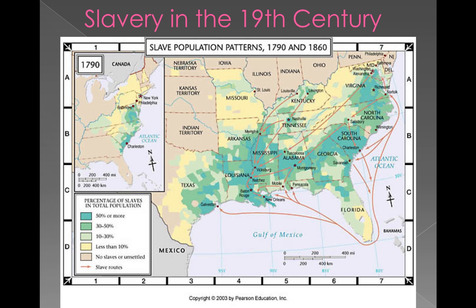When the international slave trade is abolished in 1808, we also see the reliance on natural increase to expand the slave population. Natural increase is just another way of saying that slaves were now reproducing at home. They could no longer rely on importing slaves from places like West Africa and the Caribbean. This results in an increased value placed on female slaves of childbearing age, which is very problematic from the female perspective in African-American history.